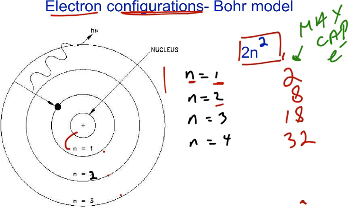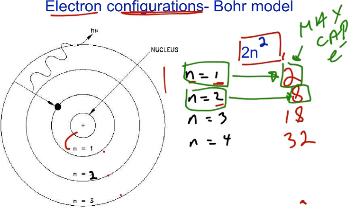So, once again, energy level number 1 cannot hold more than 2 electrons. It can hold 1, it can hold 2, but it can't hold 3 or more. Likewise, energy level number 2 cannot hold more than 8 electrons. It can go from 0 to 7, even 8, but it cannot hold 9, 10, or 11. So, any time you go over its capacity, that's a major, major violation.